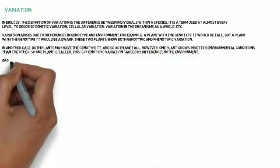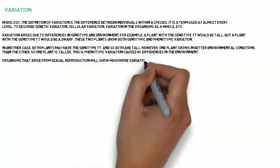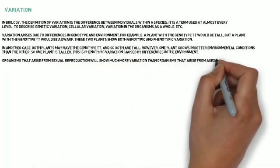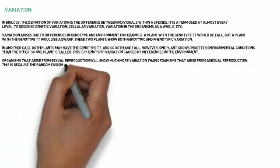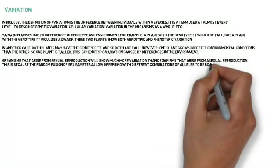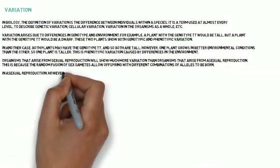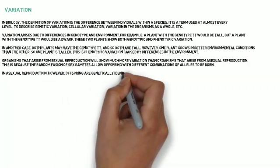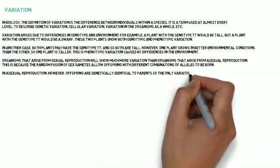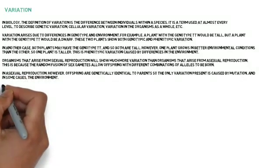Organisms that arise from sexual reproduction will show much more variation than organisms that arise from asexual reproduction. This is because the random fusion of sex gametes allow offspring with different combinations of alleles to be born. In asexual reproduction, however, offspring are genetically identical to parents, so the only variation present is caused by mutation, and in some cases, the environment.